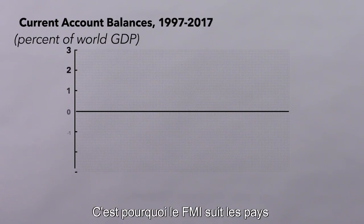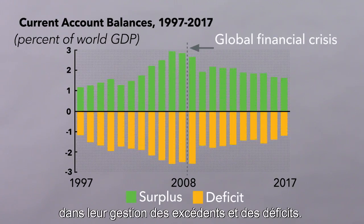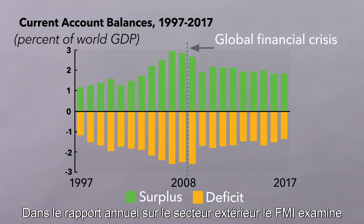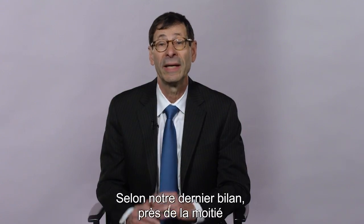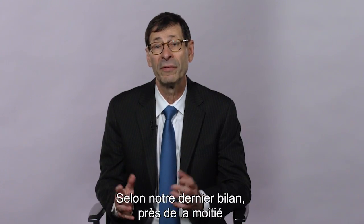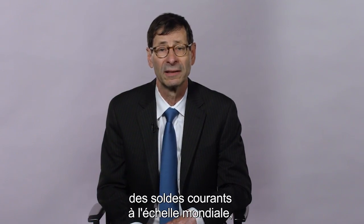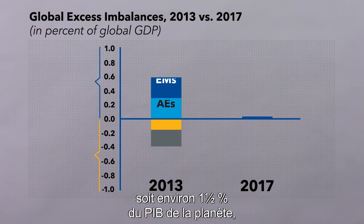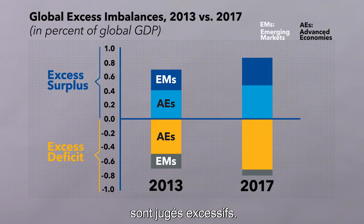That's why the IMF tracks how countries are handling their surpluses and deficits. Our annual external sector report provides the IMF's view on whether external balances are appropriate or excessive. In our latest assessment, we find that about half of the global current account balances, amounting to about one and a half percent of world GDP, are now deemed excessive.